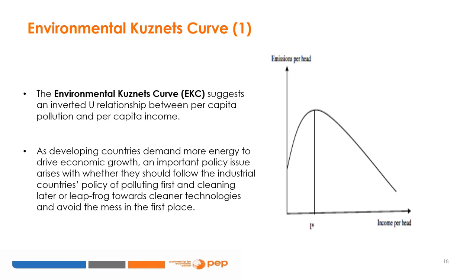In a simple perspective, in the early stages of economic growth, degradation of the environment and pollution increases, but beyond some level of income per capita — which will vary for different indicators — the trend reverses so that at high income levels, economic growth leads to environmental improvement. This implies that the environmental impact indicator is an inverted-U-shaped function of income per capita. Typically, the logarithm of the indicator is modeled as a quadratic function of the logarithm of income. The EKC is named for Simon Kuznets, who hypothesized that income inequality first rises and then falls as economic development proceeds.